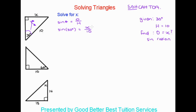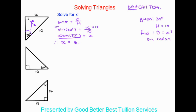To get x by itself and out of the fraction, we need to multiply both sides by 10. So on the left-hand side we now have 10 sine 30 degrees, which is equal to x. We put this into our calculator — punch in 10, press sine, then 30 degrees — and we get a final answer of 5.